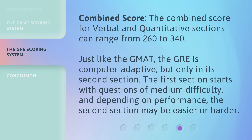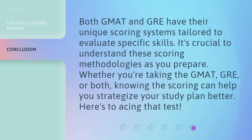Just like the GMAT, the GRE is computer adaptive, but only in its second section. The first section starts with questions of medium difficulty, and depending on performance, the second section may be easier or harder. Both GMAT and GRE have their unique scoring systems tailored to evaluate specific skills. It's crucial to understand these scoring methodologies as you prepare. Whether you're taking the GMAT, GRE, or both, knowing the scoring can help you strategize your study plan better. Here's to acing that test.